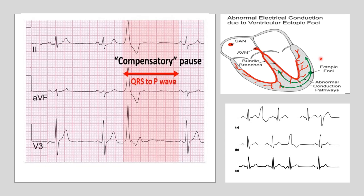When the next succeeding normal SA nodal impulse comes, it will depolarize the atria and a P wave will be generated. But this P wave cannot be seen in the ECG because it will be buried into the bizarre QRS complex of the extrasystole. When this wave tries to depolarize the ventricle, it will find that the ventricles are still in the refractory period following depolarization of the ectopic focus.